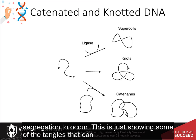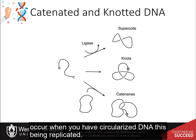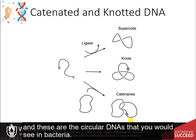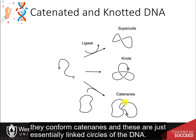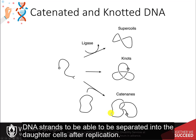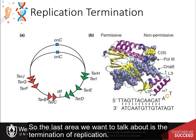This shows some of the tangles that can occur when you have circularized DNA being replicated, to give another visual. When you get two circular DNA strands — as found in bacteria — they can form catenanes, which are essentially linked circles of DNA. You would have to break apart the DNA and pull one circle out from the other to allow the two DNA strands to be separated into daughter cells after replication. The last area to discuss is the termination of replication.